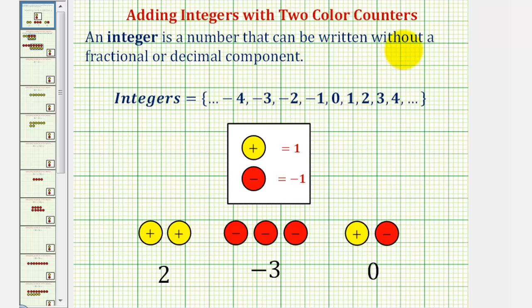An integer is a number that can be written without a fractional or decimal component. The set of integers is given here. For our lesson, we'll define a yellow counter as positive one and a red counter as negative one.